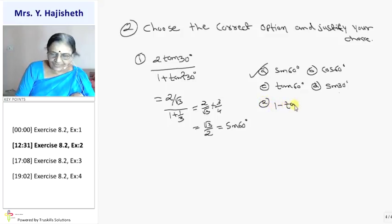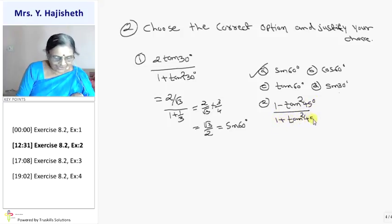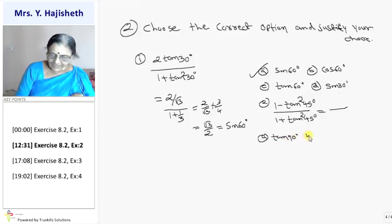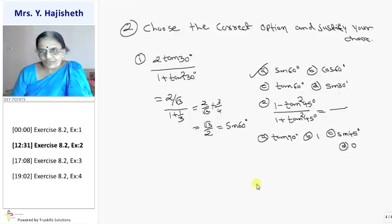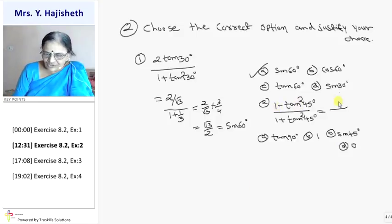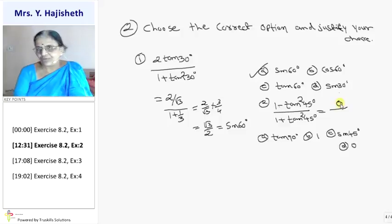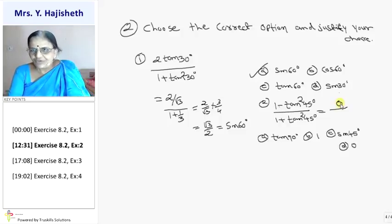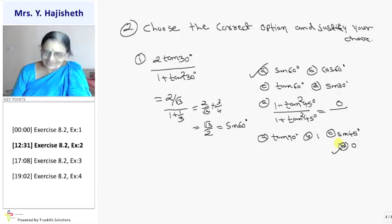Second question: (1 - tan²45) upon (1 + tan²45). Options are: A) tan90, B) 1, C) sin45, D) 0. Tan45 is 1, so 1 minus 1 squared is 0. The numerator is 0, so the whole expression is 0. My answer is D.